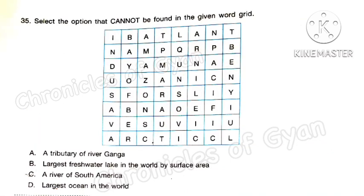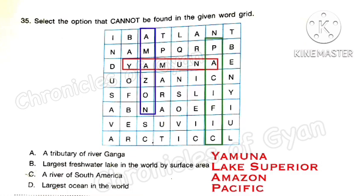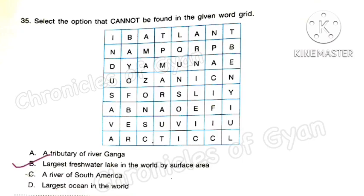Question 35: Select the option that cannot be found in the given word grid. Options A, C, and D can be found. The only option that cannot be found is option B: the largest freshwater lake by worldwide surface area, Lake Superior, which lies on the border between Canada and the United States of America. So the correct answer is option B.